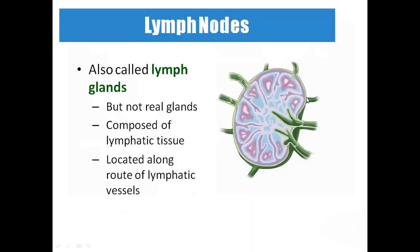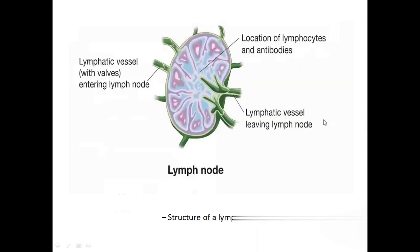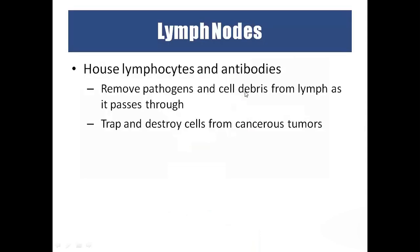What is the lymphatic node? The lymph node, also called the lymph gland, is not a real gland — it is composed of lymphatic tissue located in between the lymphatic vessels. The lymph comes in as a checkpoint: it checks the fluid for any pathogens, and after checking, the cleaned lymphatic fluid leaves by the other side. Inside, lymphocytes and antibodies check for any pathogens. After cleaning, the lymph goes out. Lymphatic nodes house lymphocytes and antibodies, remove pathogens and cell debris from the lymph, and can also trap and destroy cancerous cells.